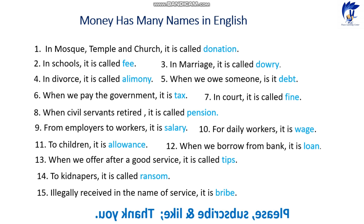Number fifteen: money illegally received in the name of service is called a bribe. It's not a good practice, but it happens around the world. When there is corruption or poor management or control in a city or country, people do a service and get more money than the standard rate. We call this money bribe.